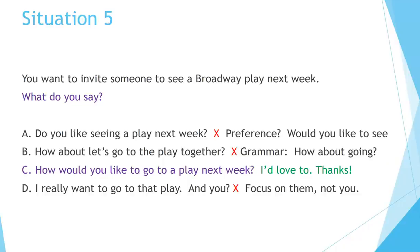The best answer is C: How would you like to go to a play next week? I'd love to. Thanks. What's wrong with the others? A. Do you like seeing a play next week? — Are you asking them what their preference is? To invite them, you need to say 'Would you like to see a play next week?' B. How about let's go to the play together? — The grammar is incorrect. It's better to say 'How about going?' D. I really want to go to that play. And you? — Focus on the other person, not yourself.